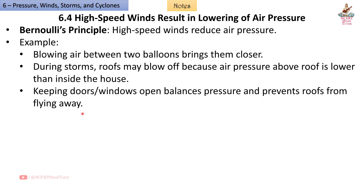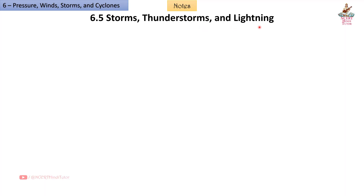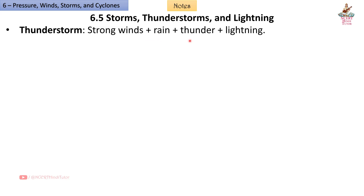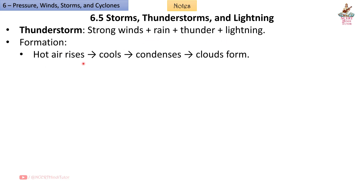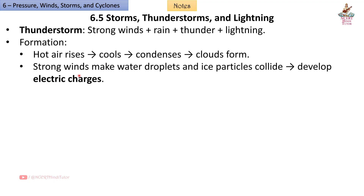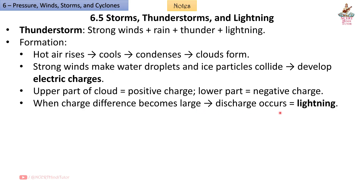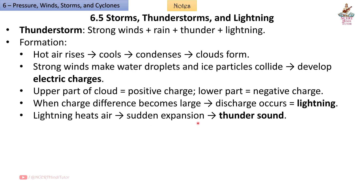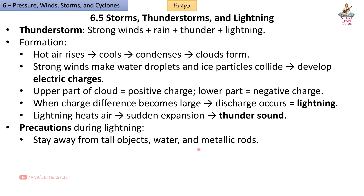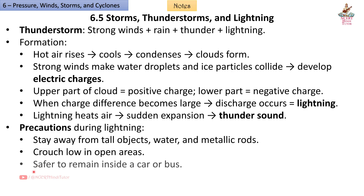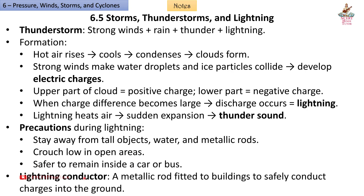6.5 Storms — Thunderstorms and Lightning. A thunderstorm involves strong winds, rain, thunder, and lightning. Formation: Hot air rises, cools, and condenses, forming clouds. Strong winds make water droplets and ice particles collide, developing electric charges. The upper part of the cloud has positive charge and the lower part has negative charge. When the charge difference becomes large, discharge occurs as lightning. Lightning heats air, causing sudden expansion which produces the thunder sound. Precautions: Stay away from tall objects, water, and metallic rods; crouch low in open areas; it is safer to remain inside a car or bus. A lightning conductor is a metallic rod fitted to buildings to safely conduct charges into the ground.